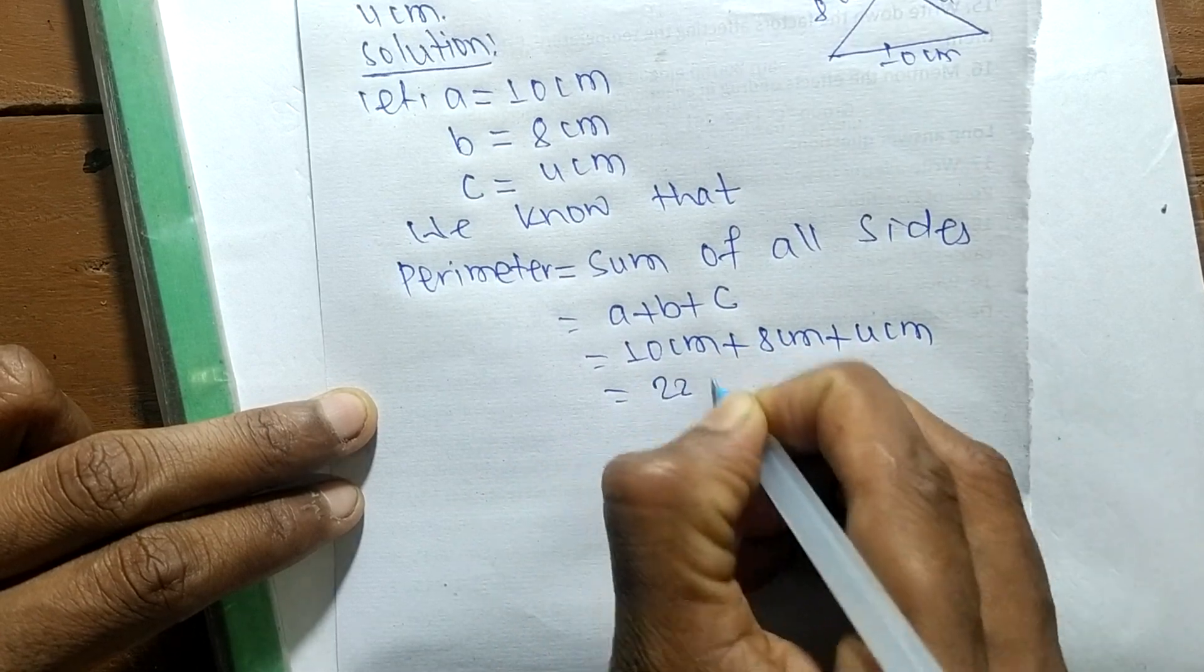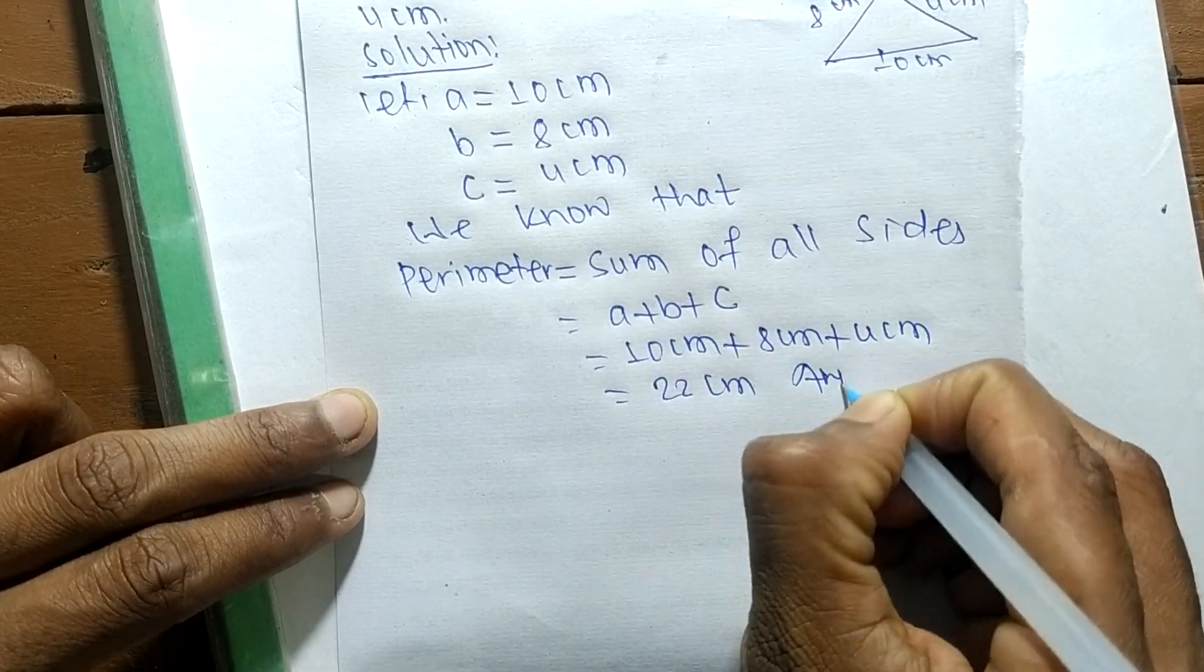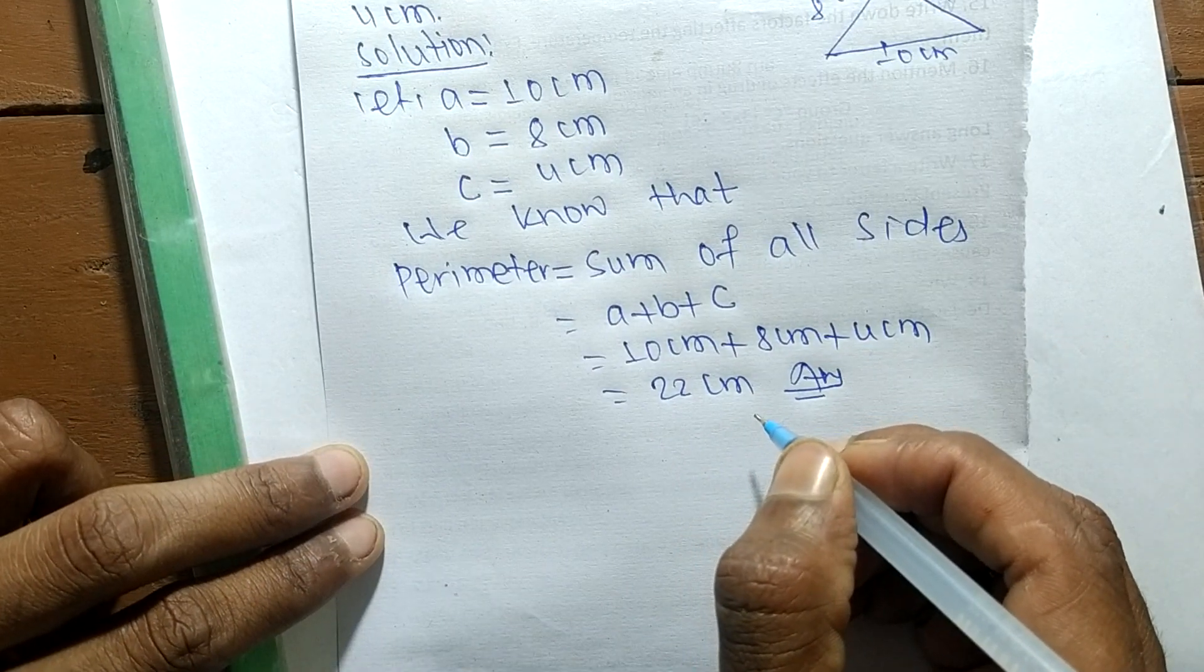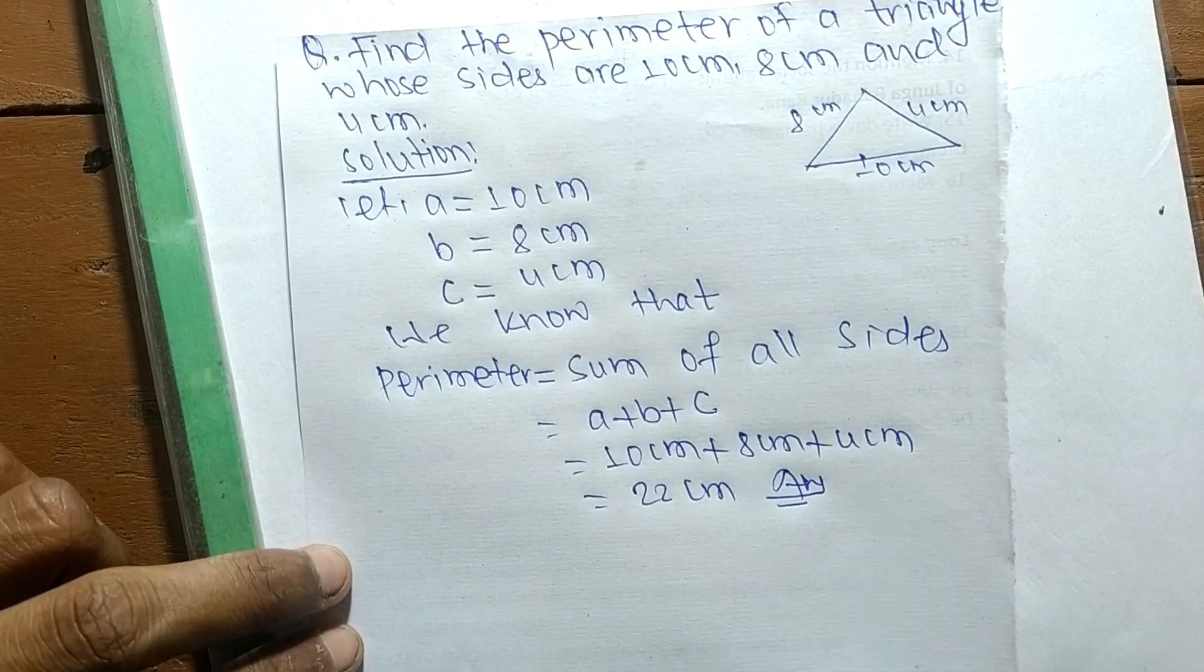So the perimeter of triangle is 22 cm. So this much for today and thanks for watching.